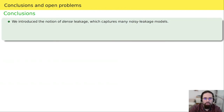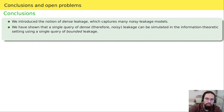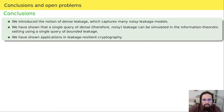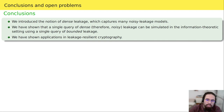In conclusion, we first introduced the notion of dense leakage, which captures many existing notions of noisy leakage. We showed that a single query of dense leakage can be simulated in the information-theoretic setting using a single query of bounded leakage, thus allowing simulation of noisy leakage with bounded leakage. We gave applications in leakage-resilient cryptography — not only for bounded collusion protocols but also for leakage resilience of linear secret sharing and any cryptographic primitive with bounded leakage resilience in the information-theoretic setting, such as forward secure storage, leakage-resilient storage, leakage-resilient non-malleable codes, and many others.